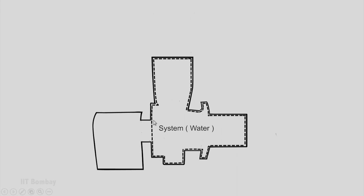The motor part, in which there is no water present, is not part of our thermodynamic system and hence is not included in the dotted line. We also notice that water can flow in through the inlet duct and flow out through the exhaust duct. So this is an illustration of an open thermodynamic system.